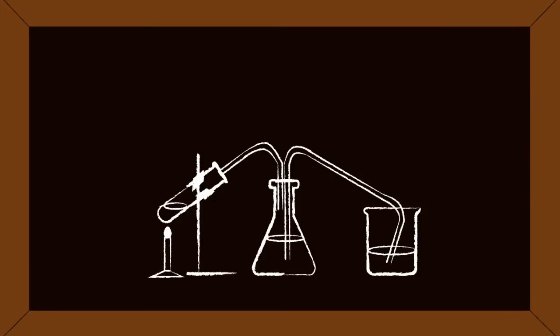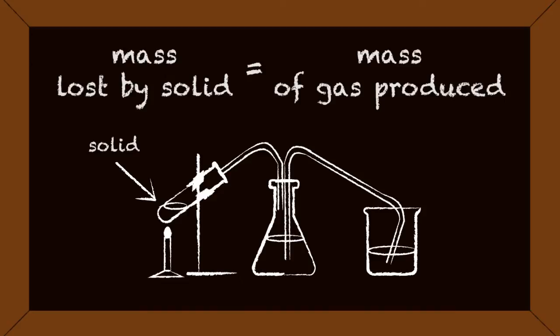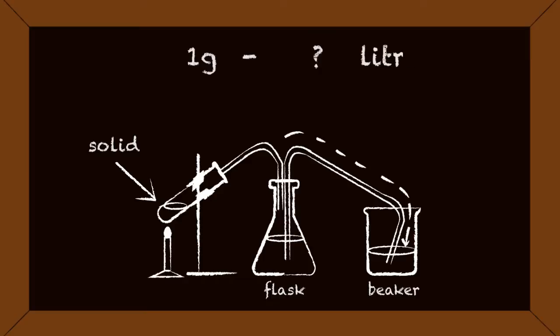From this reaction setup you can measure the mass lost by the solid when it is heated. The mass lost by the solid in the test tube is the same as the mass of the gas produced. You can measure the volume of the gas produced by how much water is displaced from the flask into the beaker. How might you work out the volume for 1 gram of oxygen if you knew that 0.83 grams of oxygen produced 0.625 liters of oxygen from this type of experiment?